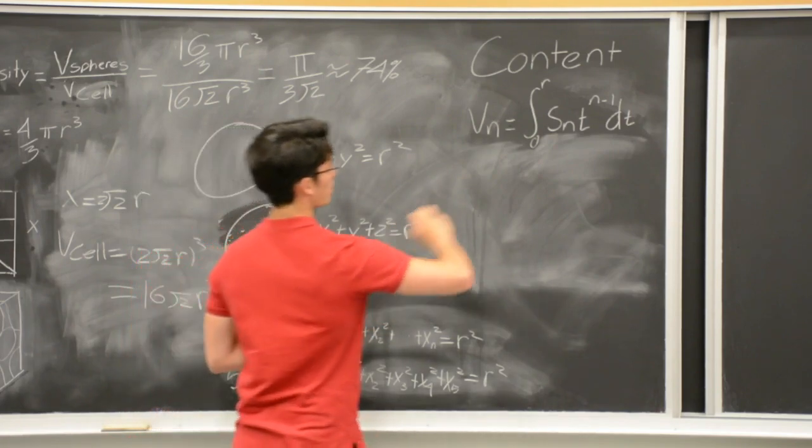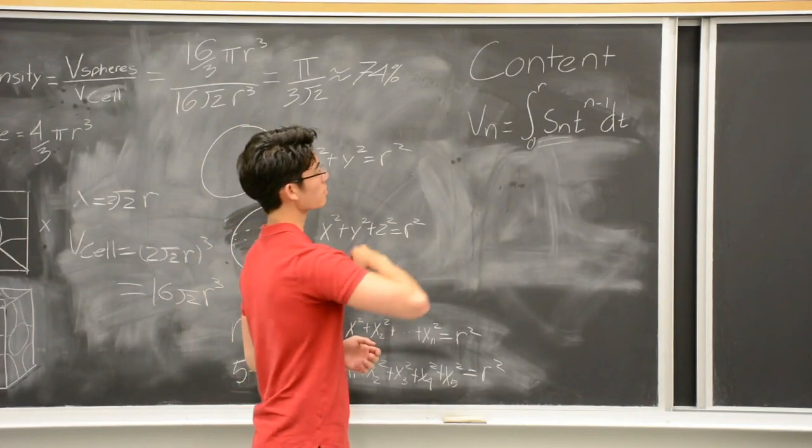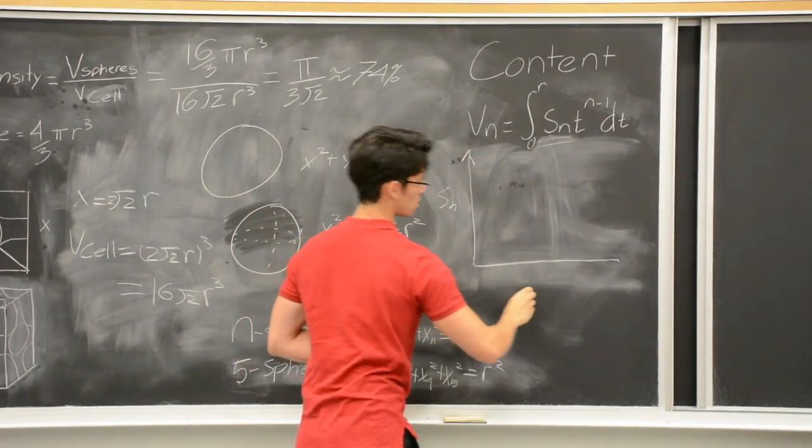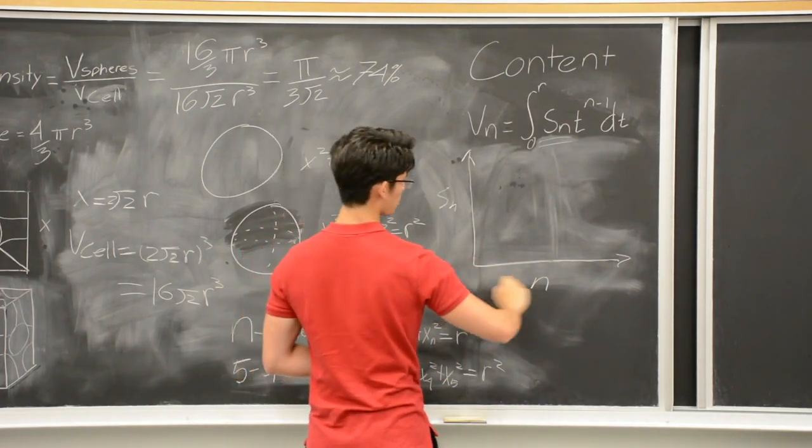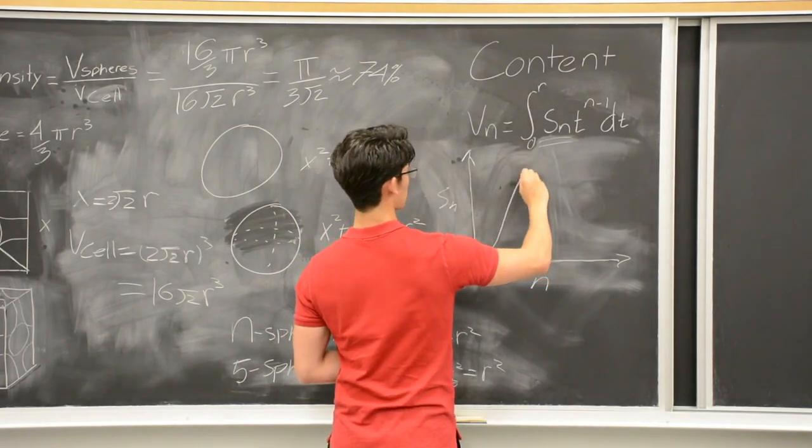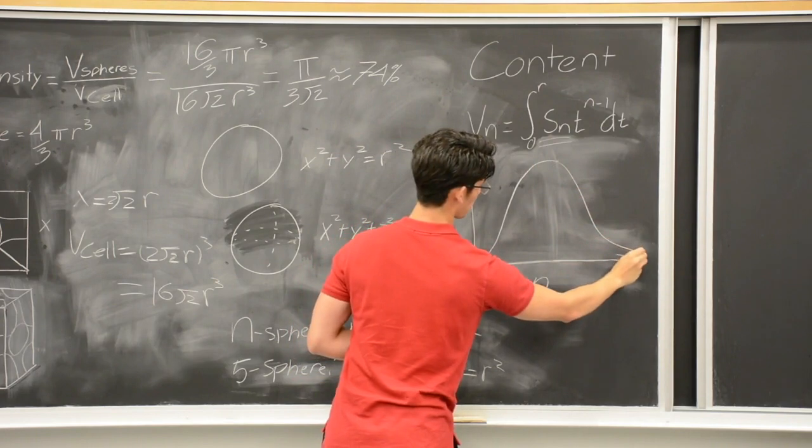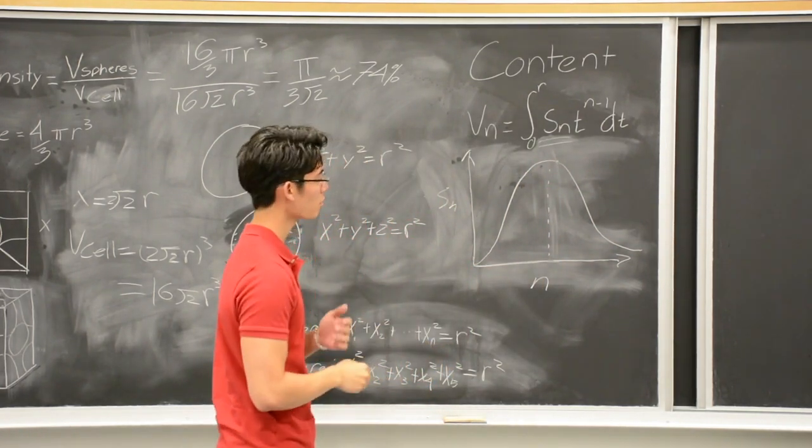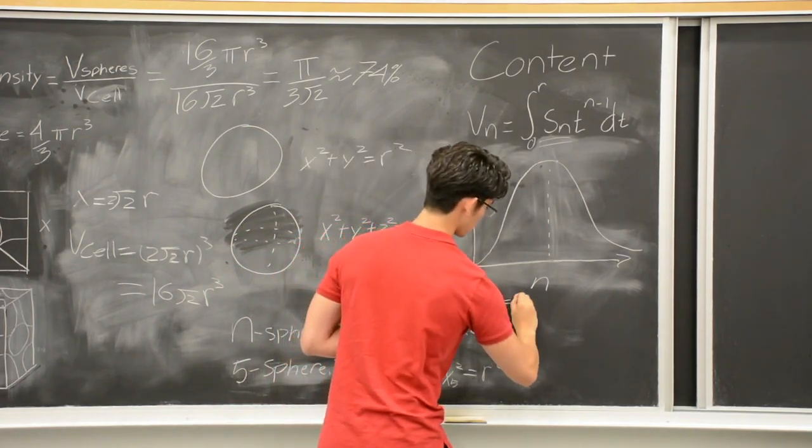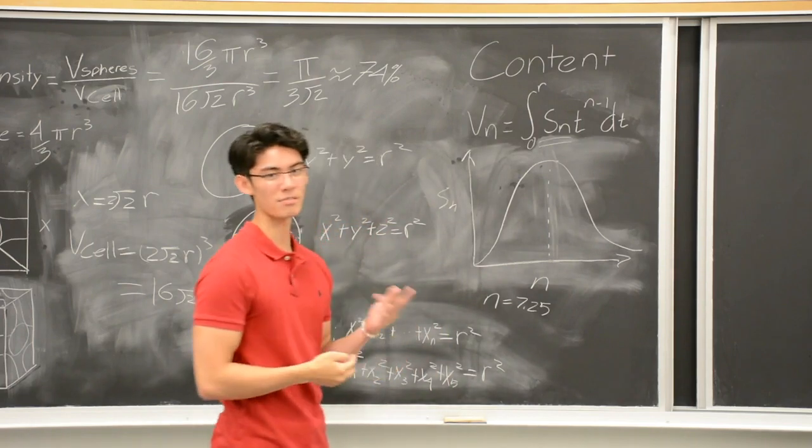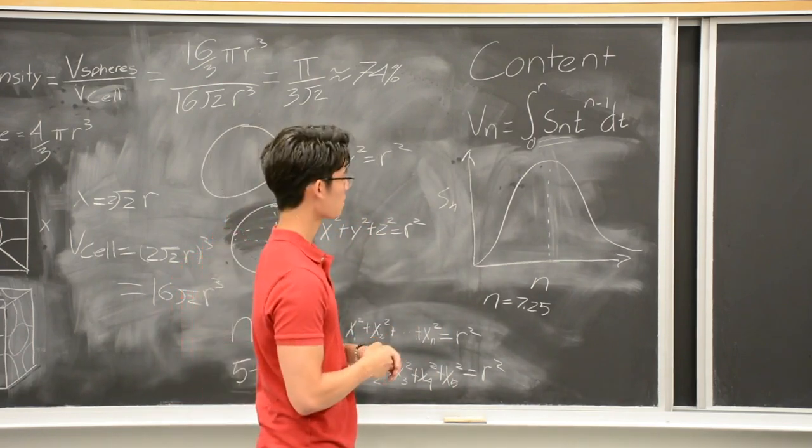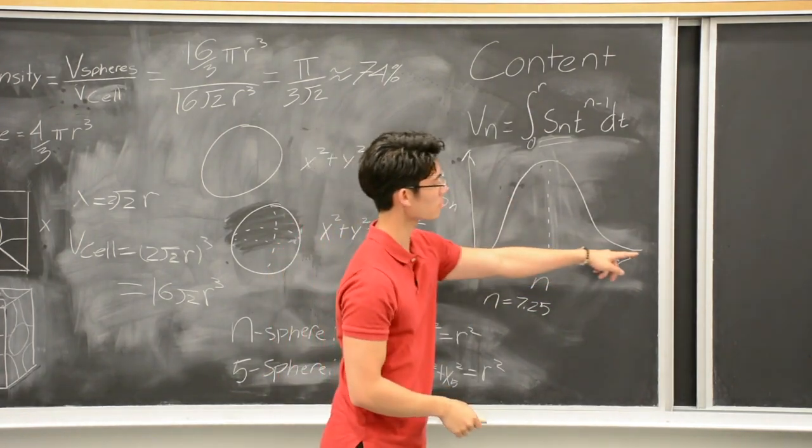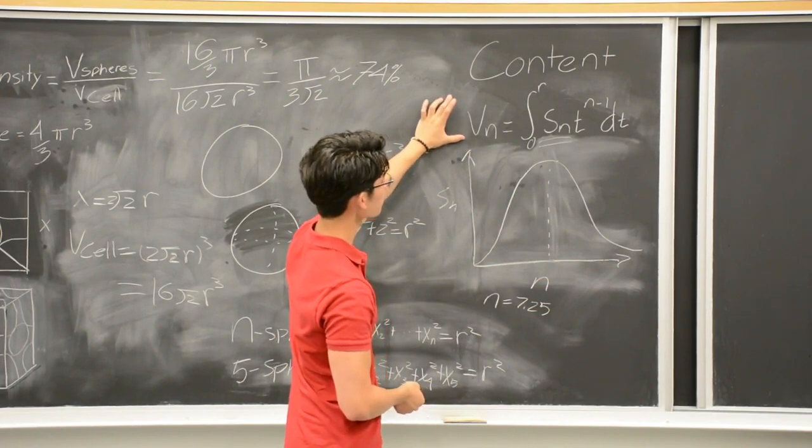Well, we can look at surface area sₙ. We can actually graph the surface area with respect to the dimension. What we see is, as n increases, sₙ increases as well. However, it peaks and then decreases. This maximum here cannot be analytically solved, but it is approximated to be around 7.25, so in between the seventh and eighth dimension. So this graph shows, as n obtains higher values towards infinity, sₙ decreases towards zero. Therefore, the content of a hypersphere will also decrease.